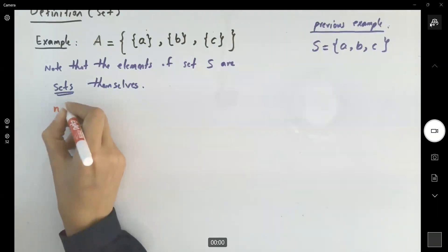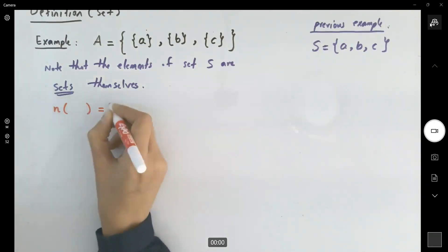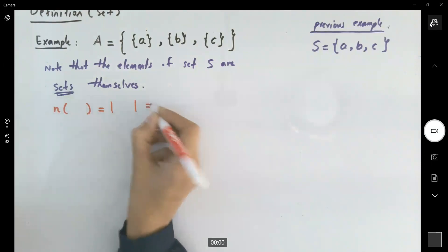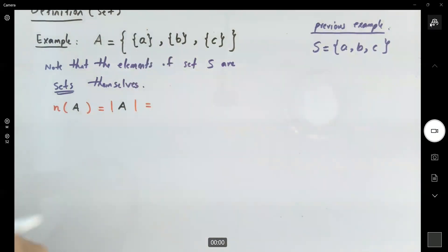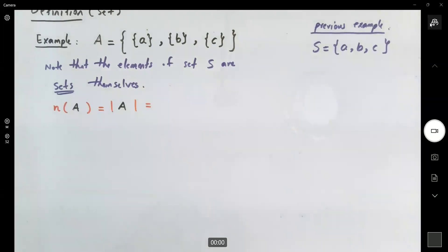N of this set, or again, guys, if you open different discrete math book or set theory book or number theory book, you might see these different symbols representing the size of the set. The size of set A or the cardinality of set A. How many members do we have? Well, let's just count them.